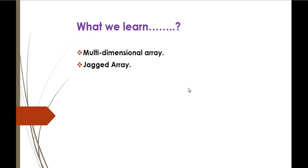Before jumping into jagged arrays, I'd like to recall that in the previous session we learned how to create a multidimensional array, how to store values in it, and how to retrieve them. In a multidimensional array, the number of elements in a row did not change — it was constant and the same throughout the entire array. That is the key difference from the jagged array.